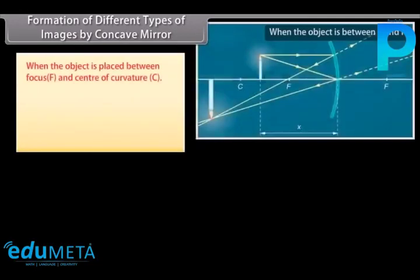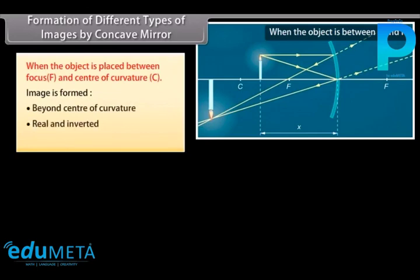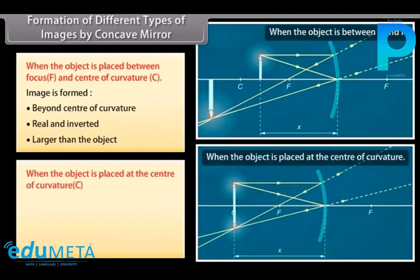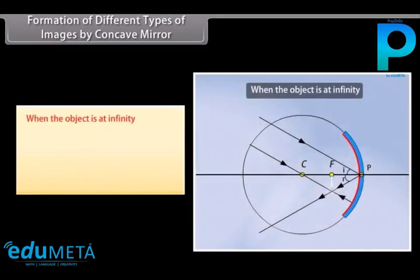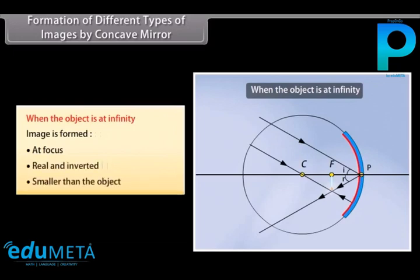When the object is placed between focus F and center of curvature C, the image is formed beyond the center of curvature — real and inverted, larger than the object. When the object is placed at the center of curvature C, the image is formed at C — real and inverted, same size. When the object is at infinity, the image is formed at the focus — real and inverted, smaller than the object.